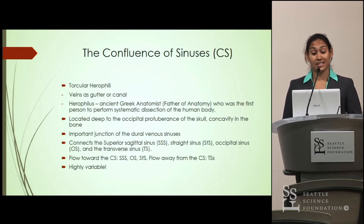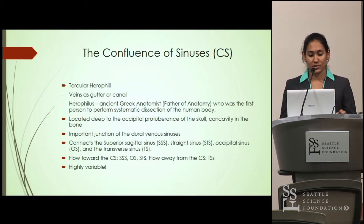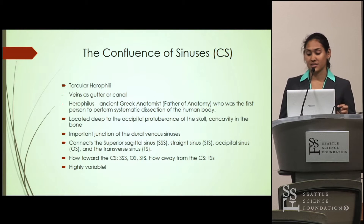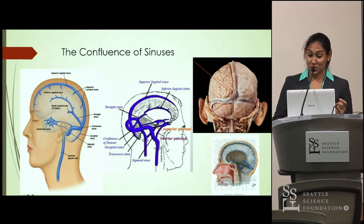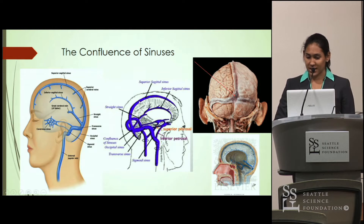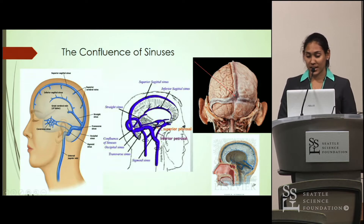The confluence of sinuses is located deep to the occipital protuberance of the skull, and there's a concavity in the bone where the confluence of sinuses sit. It's a very important junction of the dural venous sinuses because it connects various dural venous sinuses for drainage — the superior sagittal sinus, the straight sinus, the occipital sinus, and the two transverse sinuses, all intersecting at one point.